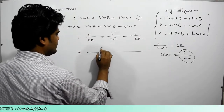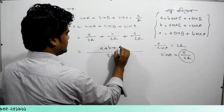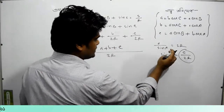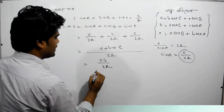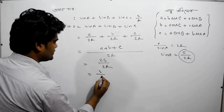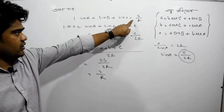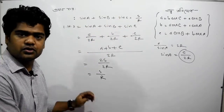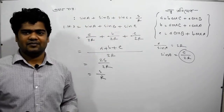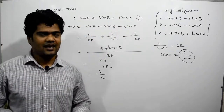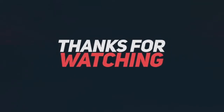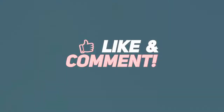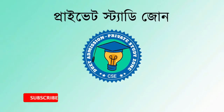So 2r is equal to a plus b plus c. Since a plus b plus c equals 2s, we get 2s divided by 2r, which is equal to s by r. So we can see a by 2r plus b plus c gives us the final result.